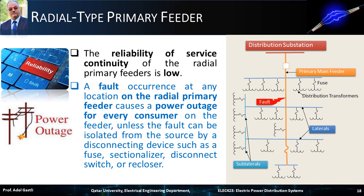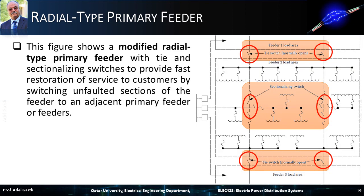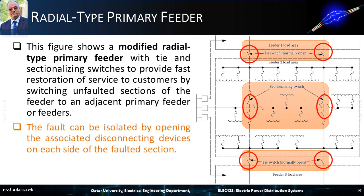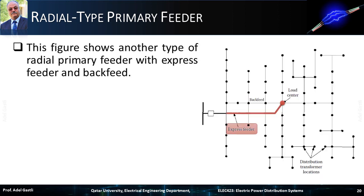This figure shows a modified radial type primary feeder with tie and sectionalizing switches to provide fast restoration of service to customers, by switching unfaulted sections of the feeder to an adjacent primary feeder or feeders. This configuration is much more reliable than the previous one because it can provide better continuity of service. The fault can be isolated by opening the associated disconnecting devices on each side of the faulted section. This figure also shows another type of radial primary feeder with express feeder and back feed, where each dot represents a load lumped at that location.